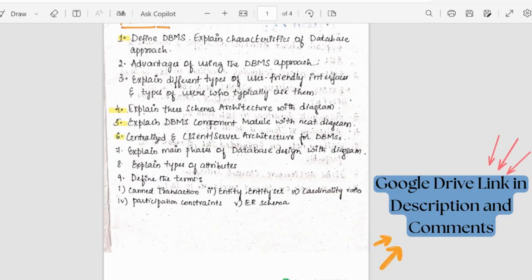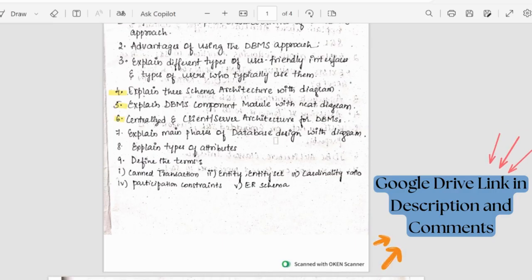Then coming to centralized and client server architecture of DBMS. Then we have the main phases of DBMS design. There are five to six steps like collection, analysis, conceptual design, logical design, implementation and all.